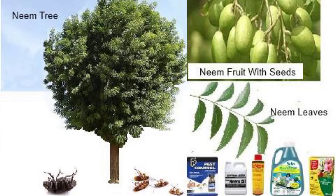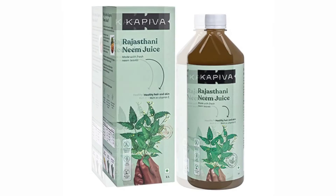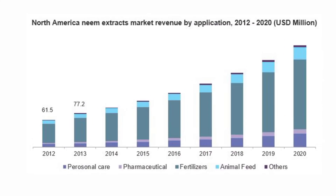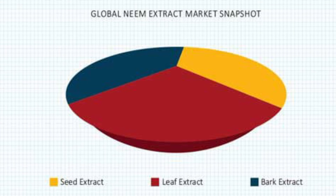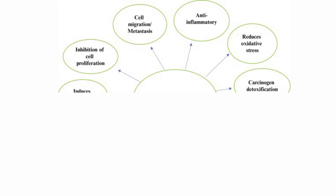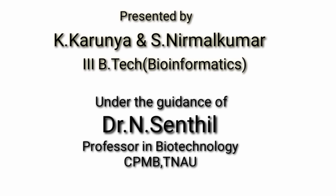Some of the commercial products of neem are neem care, terra neem, a neem-based soil protectant, and Rajasthani neem. The statistical analysis of usage of neem products year by year shows that usage is increasing over the years. With this, we came to know the importance of neem and neem products. With this, I conclude my presentation. Thanks for watching the video.